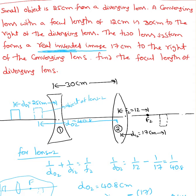The two lens system forms a real inverted image 17 cm to the right of the converging lens. So he mentioned distance of image 2 as 17 cm from the lens.